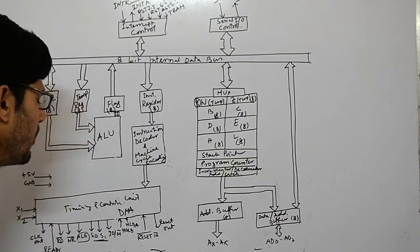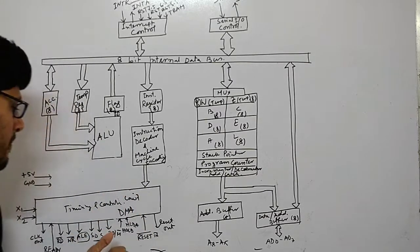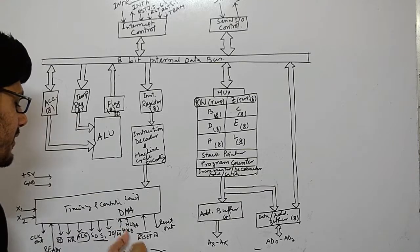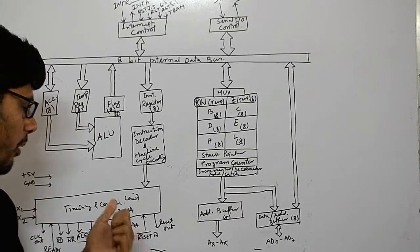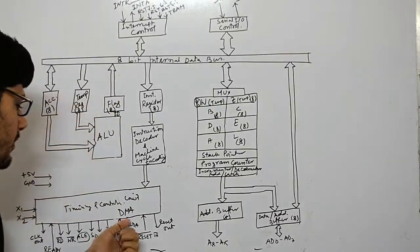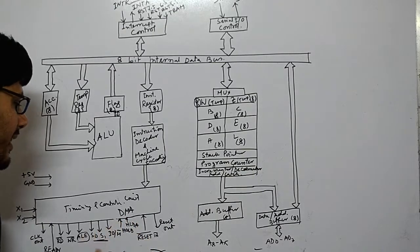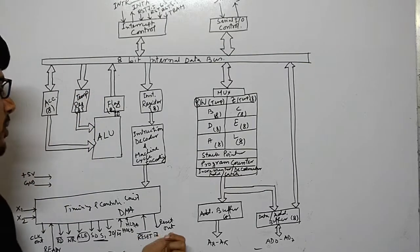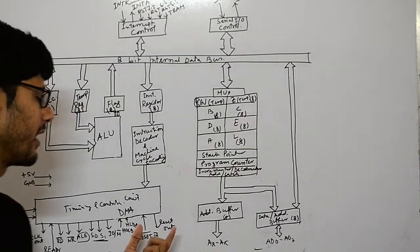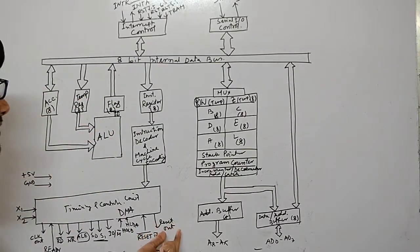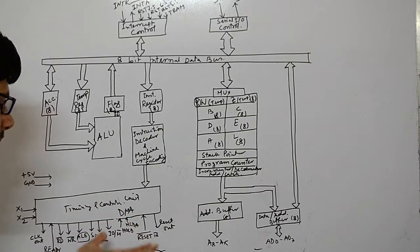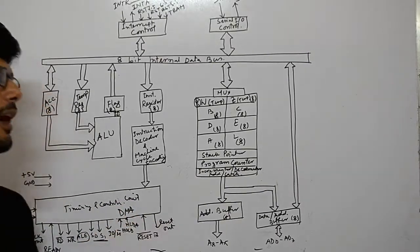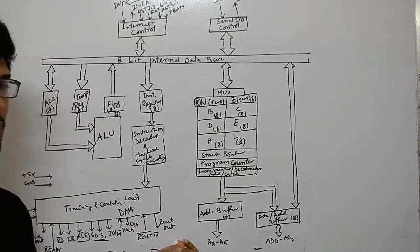HOLD and HLDA (hold acknowledgement) are used for DMA — direct memory access — operations, which will be discussed in a later video. When a DMA operation is requested, the processor holds its operation, then communicates with the external device using HLDA. The RESET IN and RESET OUT pins are reset signals: RESET IN resets the device itself, and RESET OUT resets an external device.